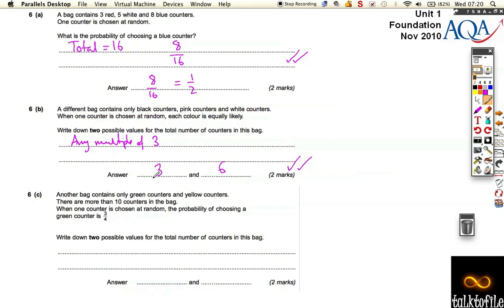Another bag contains only green counters and yellow counters. And there are more than ten counters in the bag. And when one is chosen at random, the probability of choosing green is three quarters.